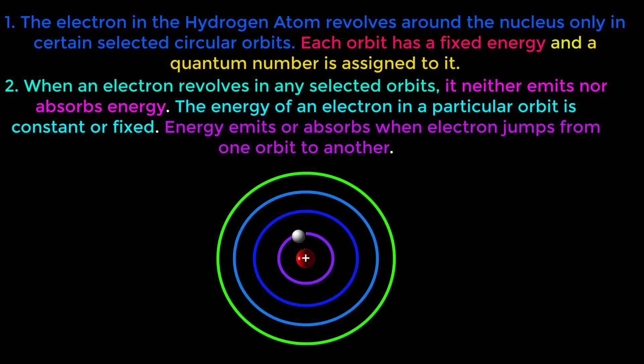He said that when an electron revolves in a selected orbit, it neither emits nor absorbs energy. Emitting of energy or absorbing of energy will only occur when electron jumps from one orbit to another. Like this or like this.